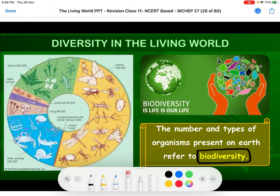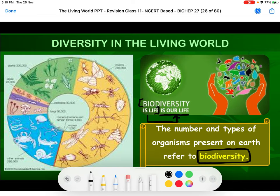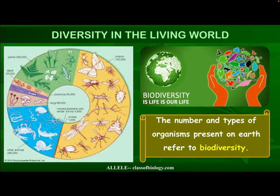Why is this biodiversity important to us? Biodiversity is life, and that is our life — the life of human beings. Human beings are definitely concerned with all the rest of the species present on the earth. We are totally dependent on our surroundings, all the environmental factors and living organisms as well, for our sustenance of life. That is the importance of biodiversity for us.